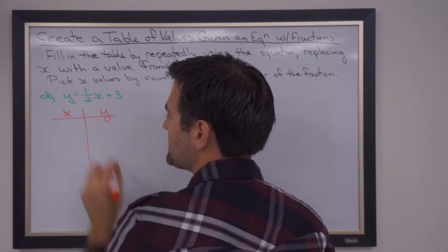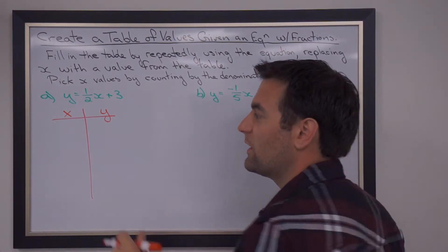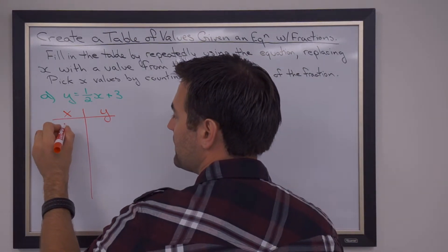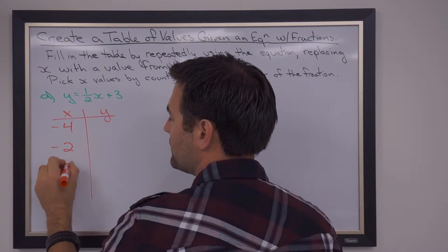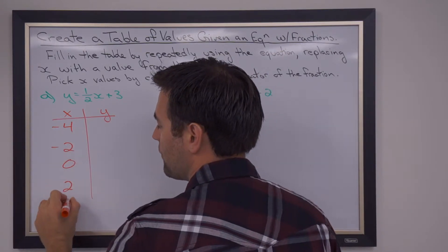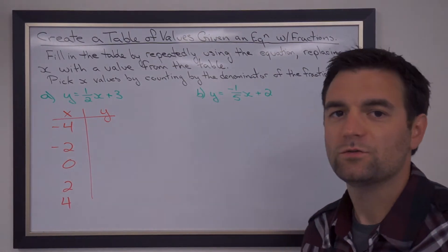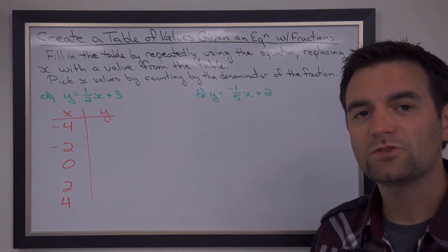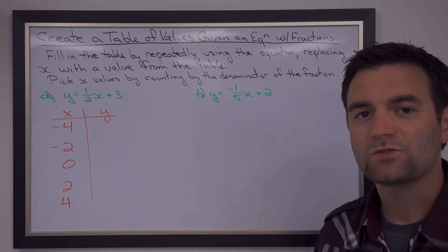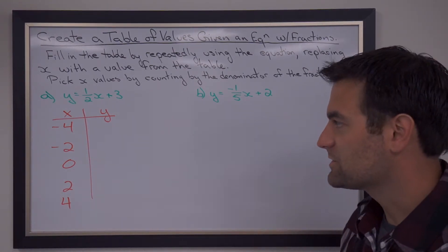But instead of having negative two, negative one, zero, one, two, we're going to have negative four, negative two, zero, two, four. So here we're counting by twos. This makes the equation a lot easier to work with. We don't have any fractions or decimals as our answers.